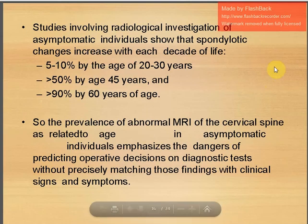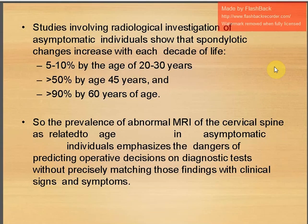Studies of asymptomatic individuals show spondylotic changes increase with each decade of life: 5–10% by age 30, more than 50% by age 45, and more than 90% by age 60. The prevalence of abnormal MRI findings in asymptomatic individuals emphasizes the dangers of basing operative decisions on diagnostic tests without precisely matching those findings with clinical signs and symptoms.